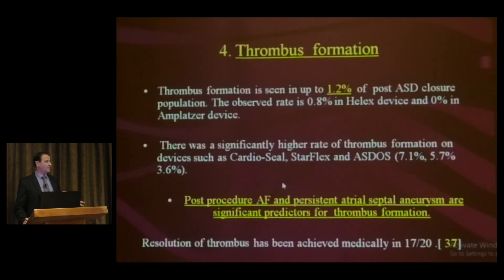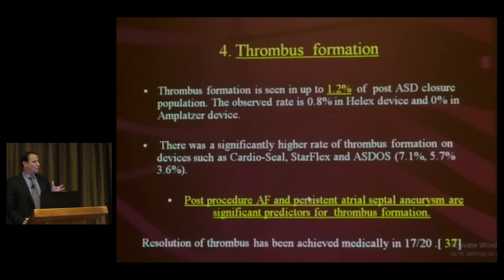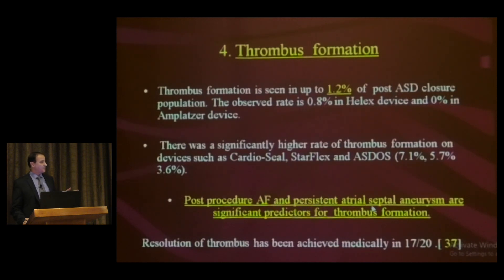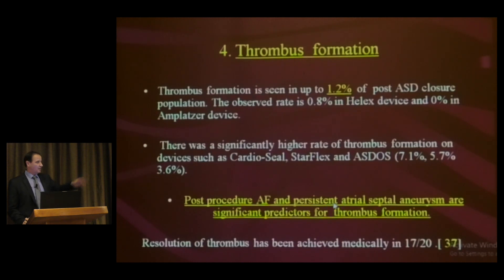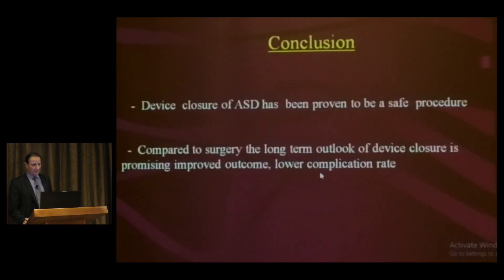The fourth complication is thrombus formation, seen in 1.2% of cases. For this reason, patients are kept on antiplatelet therapy for six months. During the procedure, ACT is maintained around 250. Post-procedure atrial fibrillation and persistent atrial septal aneurysm are significant predictors for thrombus formation; in such cases, clopidogrel may be added in addition to aspirin.